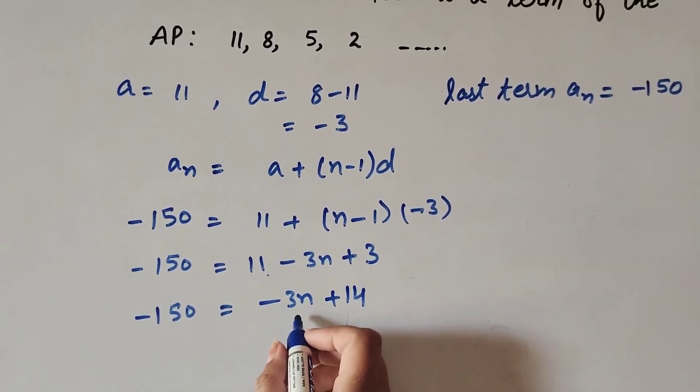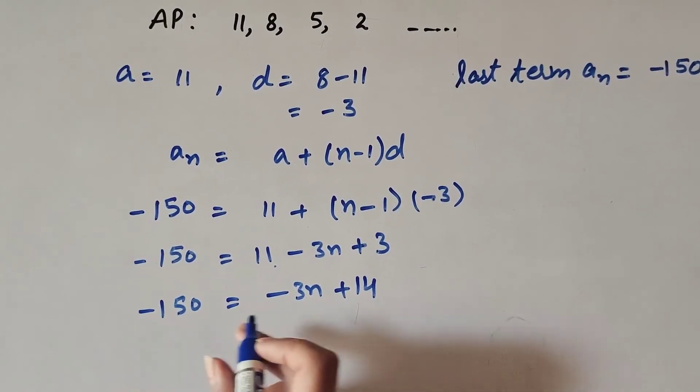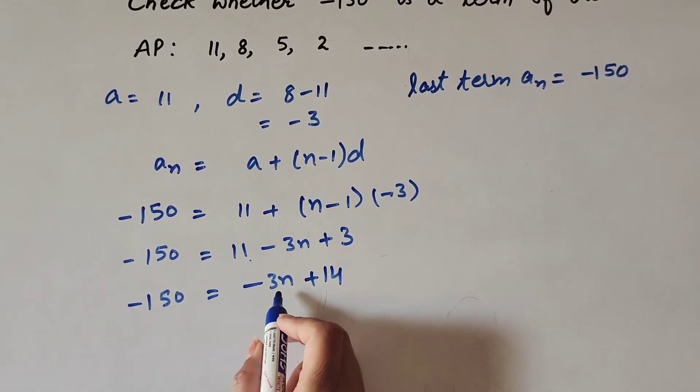Transposing -3n to the left side and -150 to the right side, we get 3n = 14 + 150.